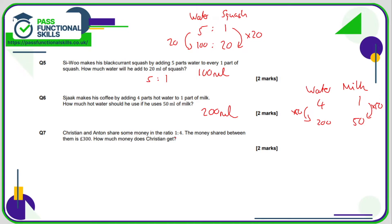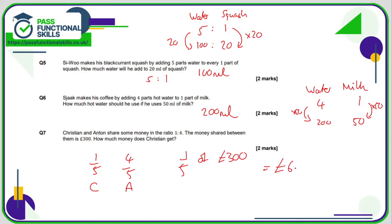Question 7: this is a different skill — dividing a total in a ratio. Add the numbers in the ratio: 1 plus 4 is 5. So one person gets one fifth and the other gets four fifths. Christian gets one fifth and Anton gets four fifths. One fifth of 300: 300 divided by 5 is 60, so Christian gets 60 pounds.